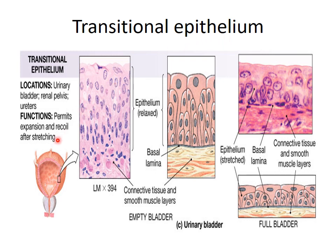Transitional epithelium, or urothelium, is restricted to the urinary passages from the minor calyx to the urethra. It is a type of stratified epithelium but is not named according to the surface layer. Its appearance varies considerably depending on the degree of distension to which it is subjected. The superficial cells in the non-distended organ appear rounded or dome-shaped, often showing a free convex border that bulges into the lumen.